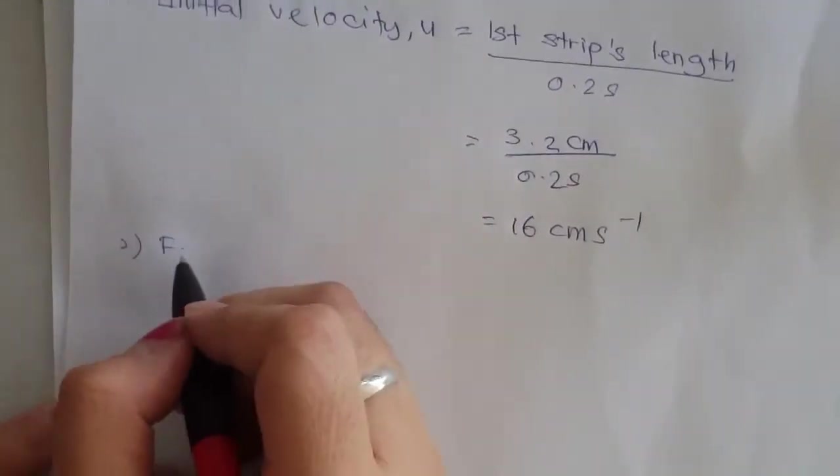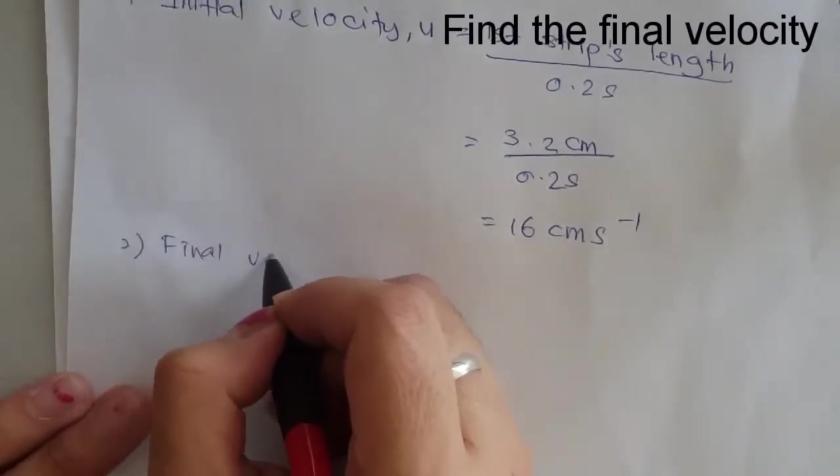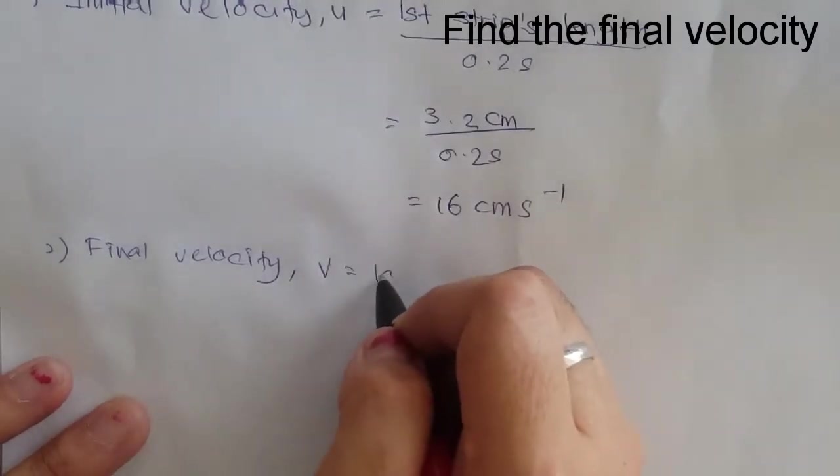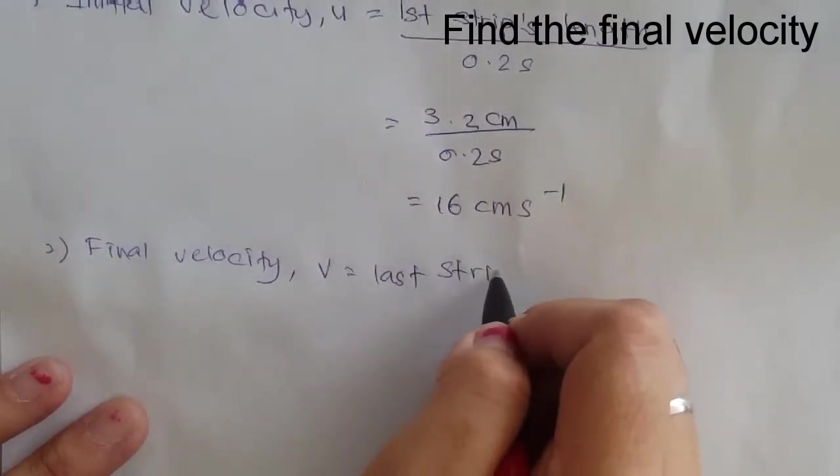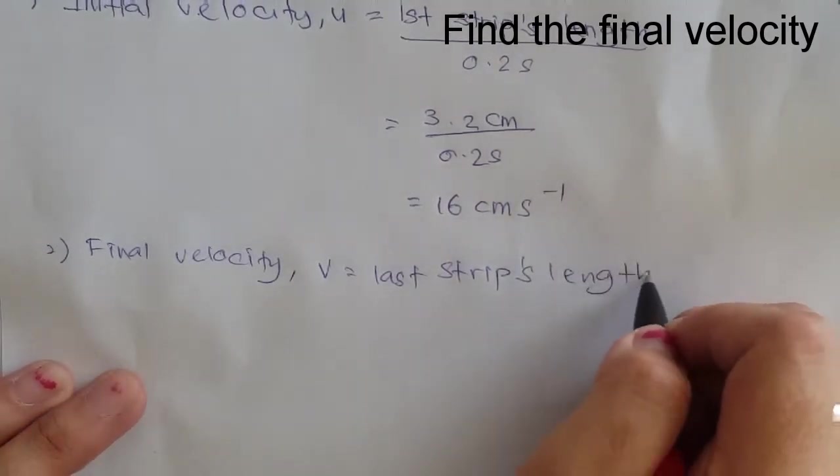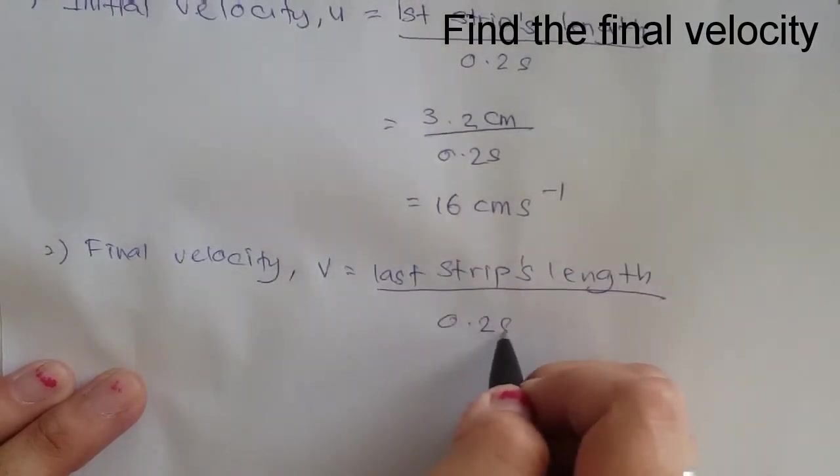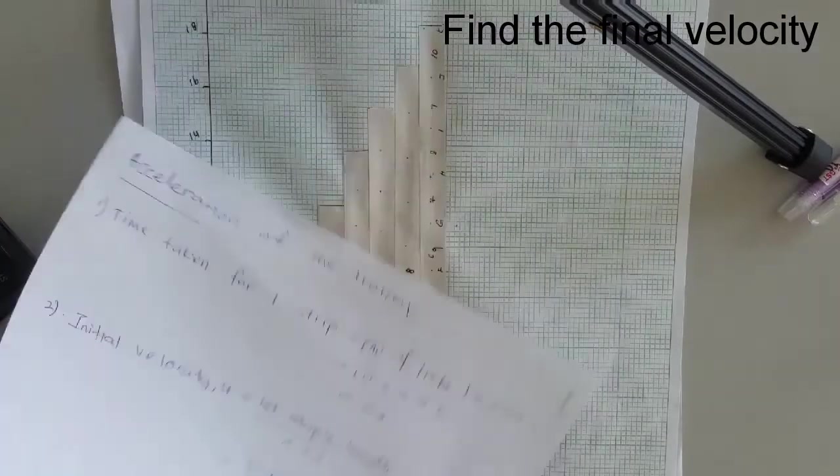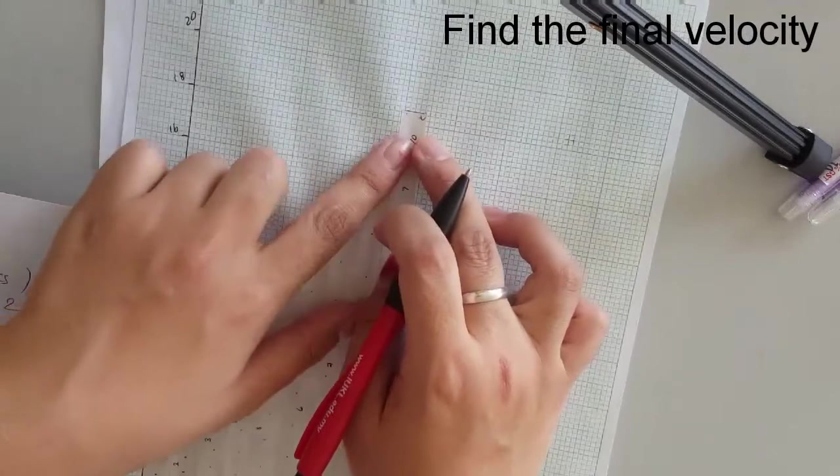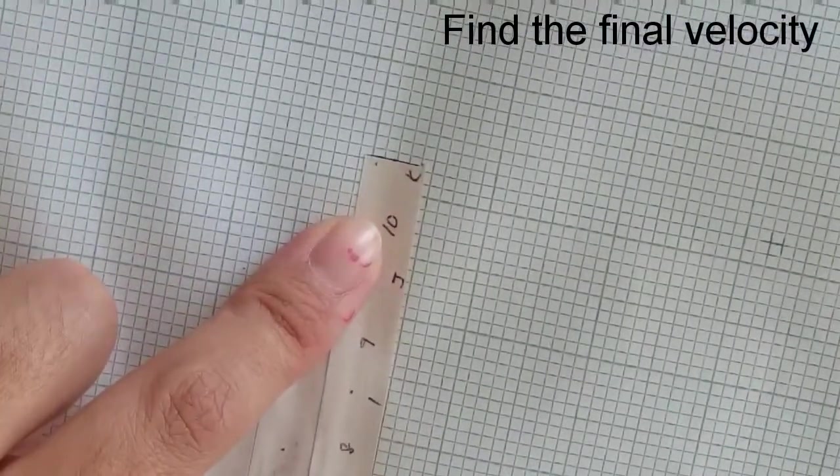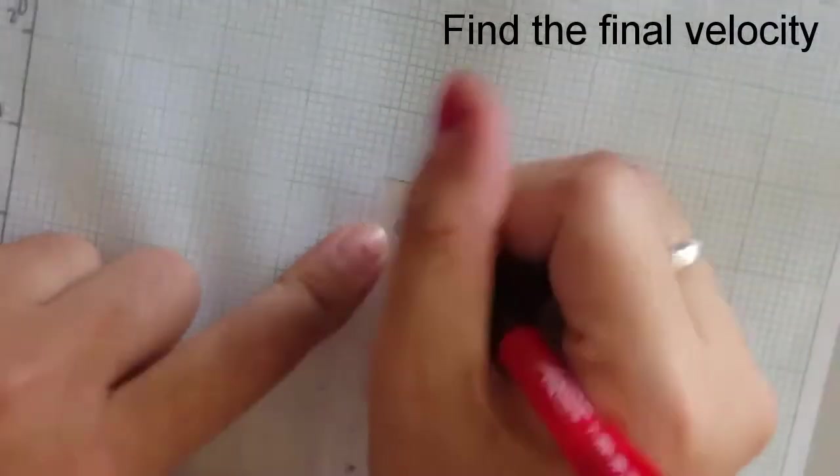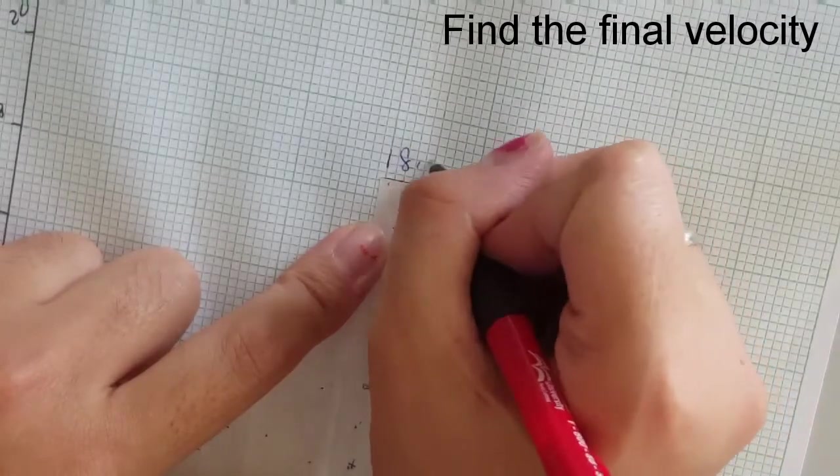So the second one. So the second one is final velocity, which is V, which is V. This is the last strip length divided by 0.2 seconds. So again, go back to the graph. My last strip number 9. This is 18. 18.1. So that would be 18.1, 18.2. So which means this is 18.2.